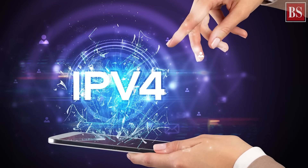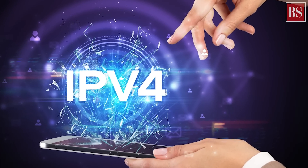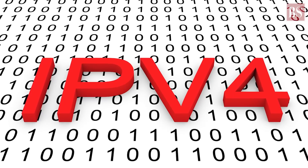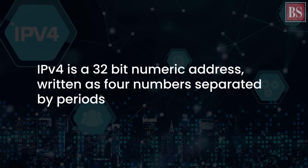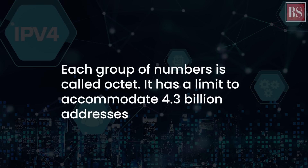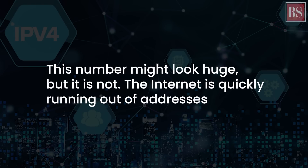Launched more than three decades ago, IPv4 has several limitations, including its capacity to cater to billions of addresses. IPv4 is a 32-bit numeric address written as four numbers separated by periods. Each group of numbers is called an octet. It has a limit to accommodate 4.3 billion addresses. This number might look huge, but it is not — the Internet is quickly running out of addresses.